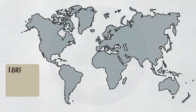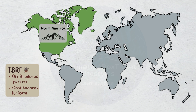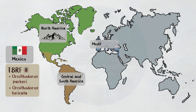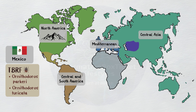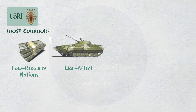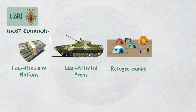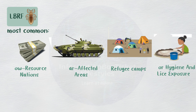TBRF is spread by ticks like Ornithodoros parkeri and Ornithodoros turicata, which are normally found endemically in the mountainous sections of North America, plateau regions of Mexico, Central and South America, the Mediterranean, Central Asia, and Africa. However, body lice are the means by which LBRF is spread. LBRF is most common in low-resource nations, war-affected areas, refugee camps, and among those with poor hygiene and lice exposure.